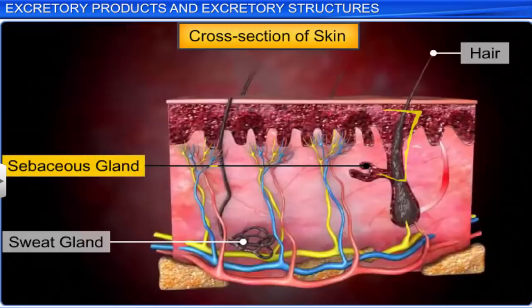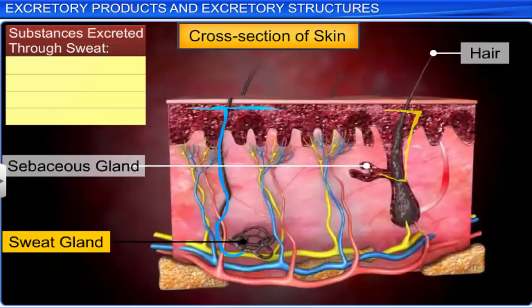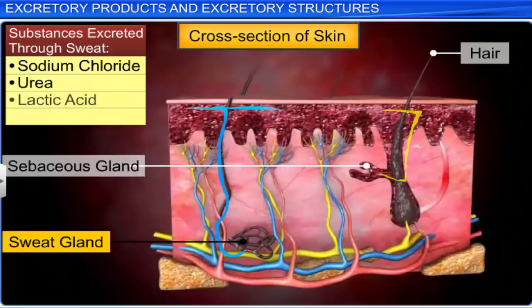Like the sebaceous glands, the sweat glands on our skin also help in the removal of excretory wastes. These glands produce sweat, a watery fluid containing sodium chloride and small amounts of substances such as urea and lactic acid. Moreover, sweat also helps to cool the body's surface.